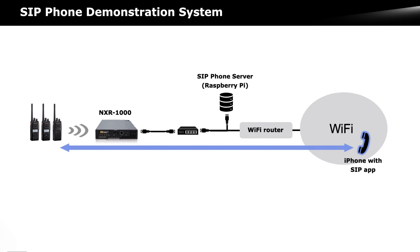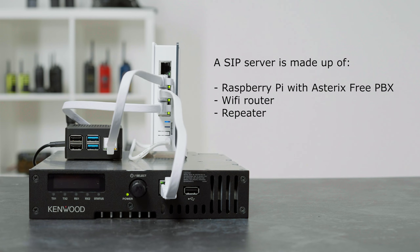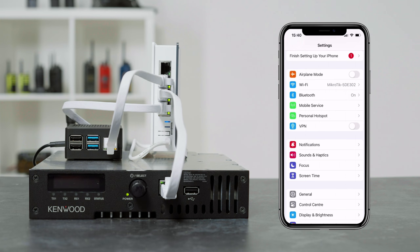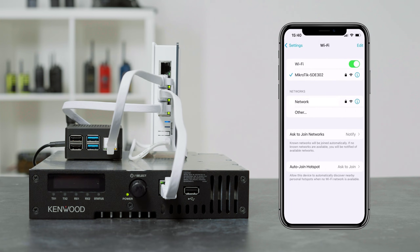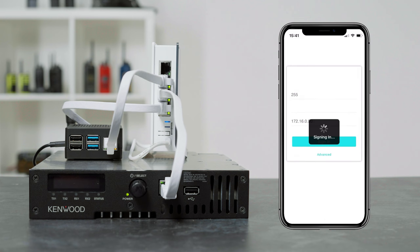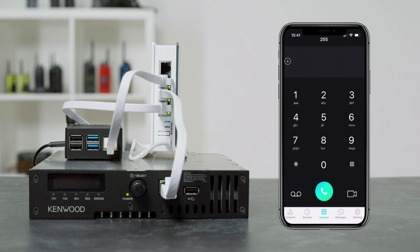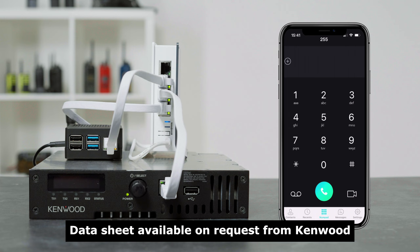Demonstrating SIP telephony is what's going to sell it to end users. Kenwood has recommendations for a test setup that is simple and standalone. The SIP server is simply a Raspberry Pi with Asterisk free PBX installed and a Wi-Fi router. Using your mobile phone, log onto the Wi-Fi router and run a SIP application, then configure this app as a SIP extension and you're up and running. If you need further help with this setup, Kenwood has a datasheet available.